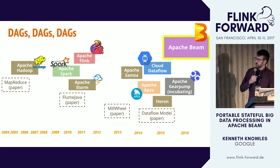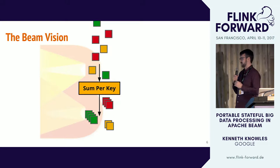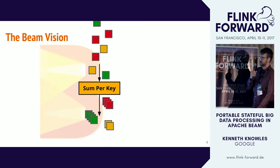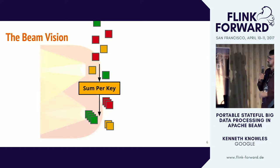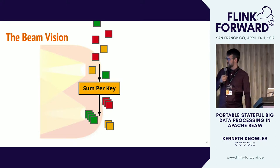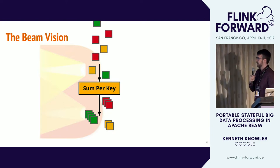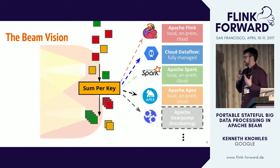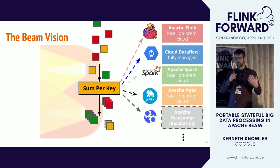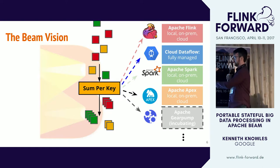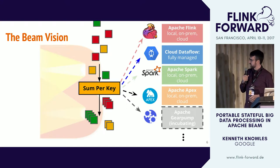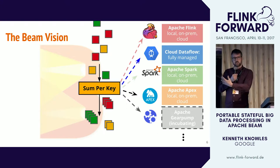We got even more ambitious. Here's a diagram of doing a sum per key — little colored squares trickling in, where the color represents the key. The summation gathers up all the red squares, adds them together, and outputs the sum. When you have this abstract, backend-independent idea of a computation graph, you can run it on Flink, Dataflow, Spark, Apex, and we have Gear Pump in a feature branch. That's one side of Beam's portability story.